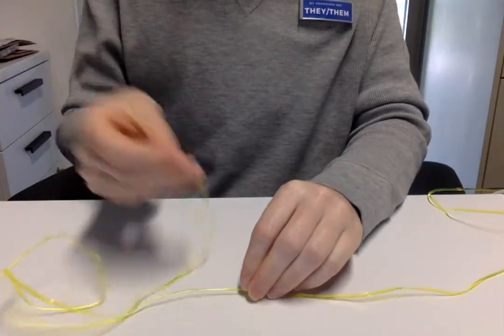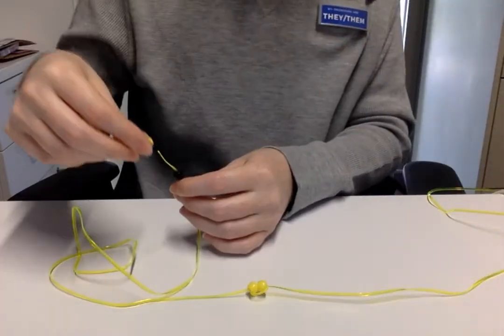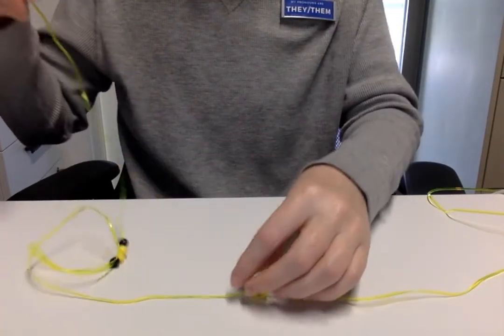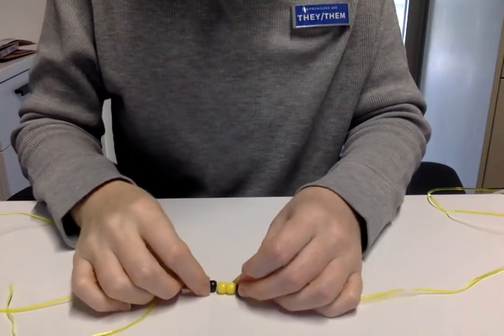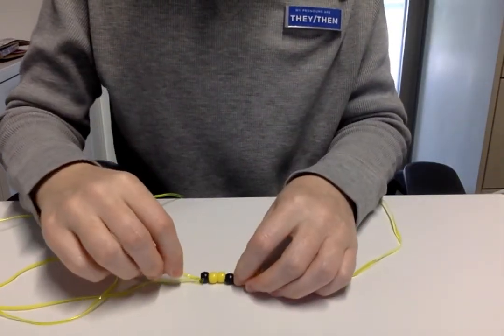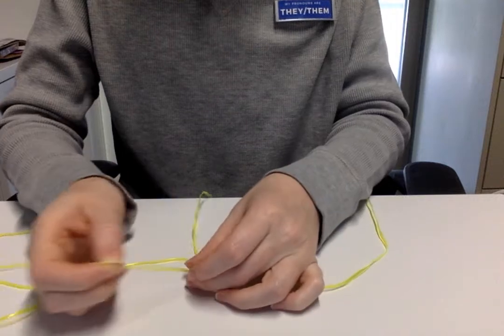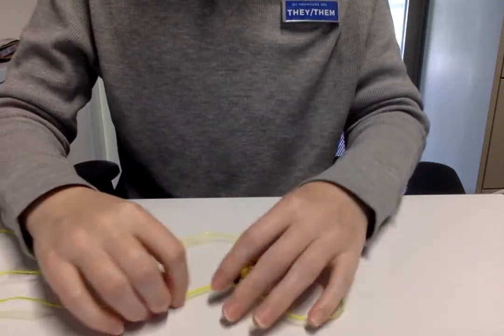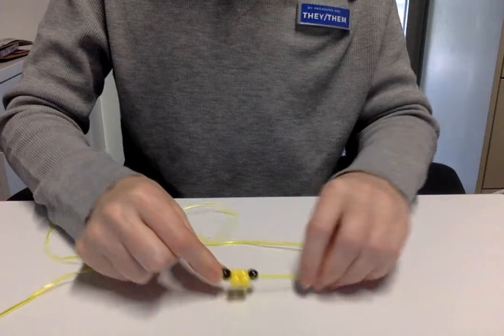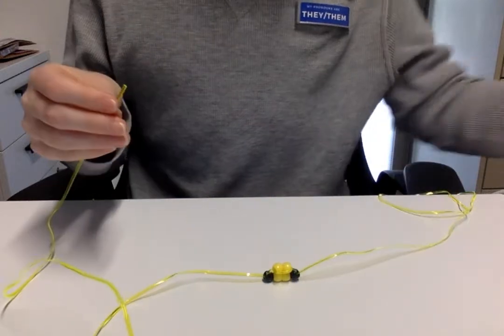Okay then your next row is going to be one black for the eye, two yellow, another black. Bring those down. Then we get the opposite end and it's going to go through this row. Make sure it's tightened up and centered.